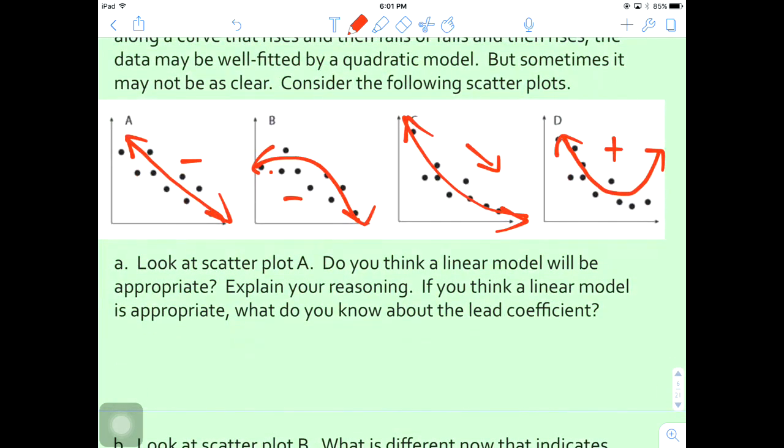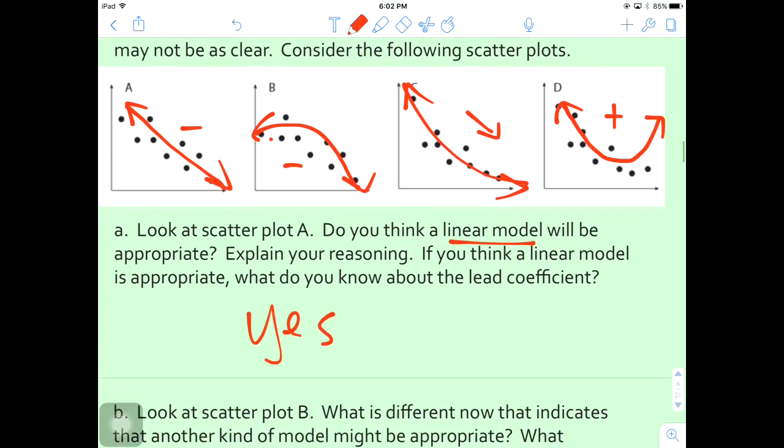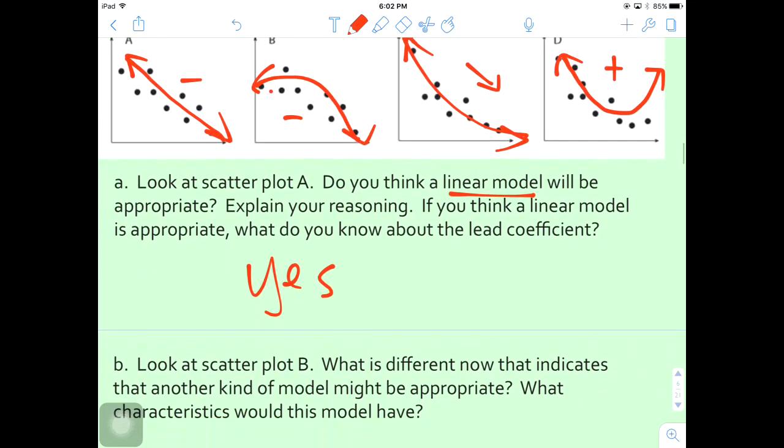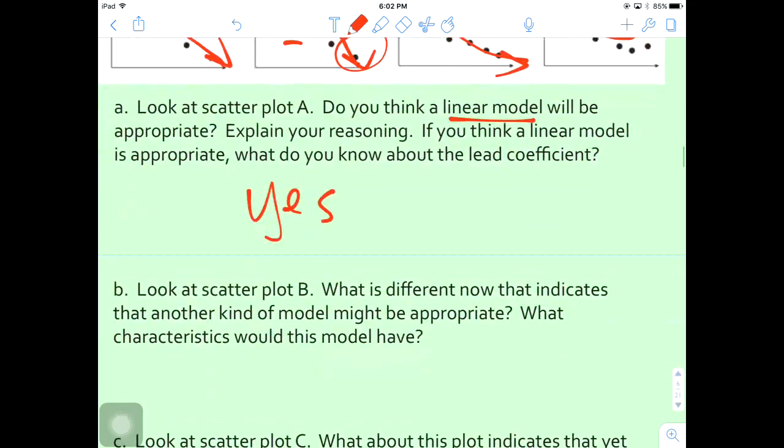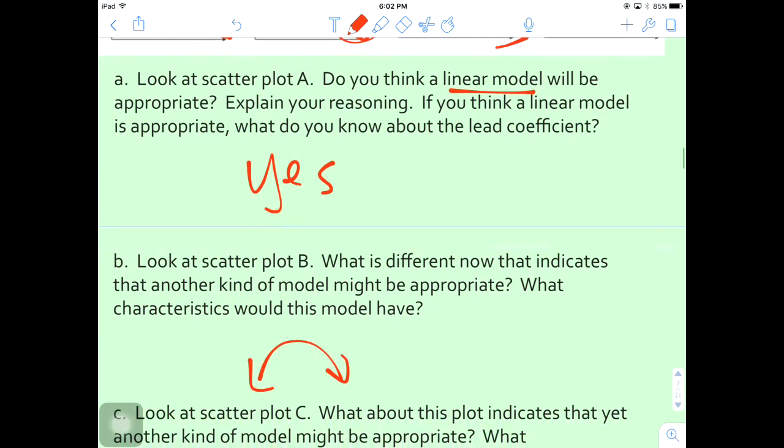So that would be what I would suggest as the choices that you would choose. If you look at A again, do you think that a linear model would be appropriate? Yes, we would say that linear because it follows pretty much the shape of a line. Look at B, what is the difference that indicates another one? Because of that end right there is probably why this would be a quadratic which is opening down.